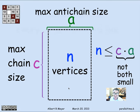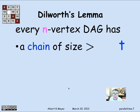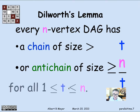This can be rephrased as a lemma credited to Dilworth. Dilworth is famous for Dilworth's theorem, of which this Dilworth's lemma is a special case — but we don't need the general theorem. Dilworth's lemma says that if you have an n-vertex DAG, then for any number T, it either has a chain of size greater than T, or it has an anti-chain of size greater than or equal to n over T. We proved this: the product of these two things has to be at least n, and T times n/T is at least n. This holds for all T between 1 and n.